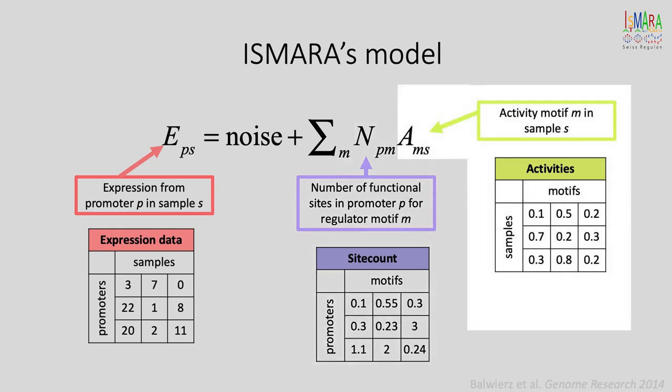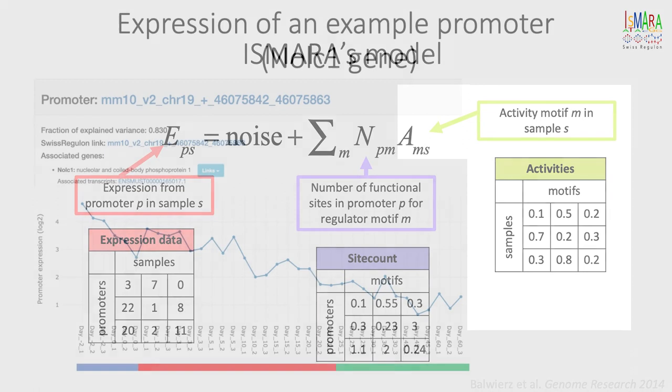ISMARA now models the expression matrix E in terms of the site count matrix N and a matrix of motif activities A, which represents the activities of each of the regulatory motifs M across the input samples S. That is, the motif activity AMS reflects how much the occurrence of a binding site for motif M in a promoter affects its gene expression in sample S.